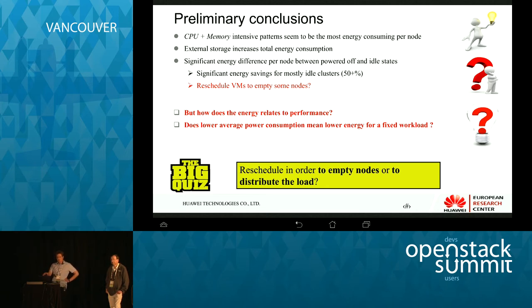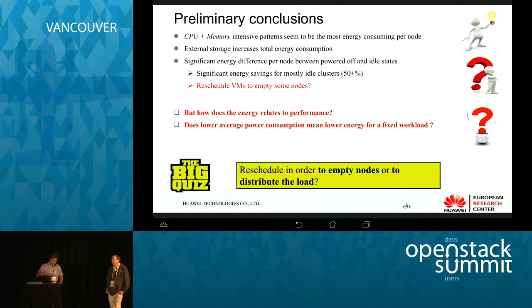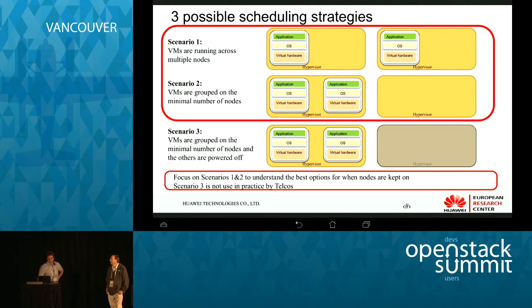Once done with those measurements, we thought: just group VMs on a node — that's the most power-efficient thing. But we had not considered that we just put as much load into the system as we could — the amount of computational work was not constant. The faster the system ran, the more of the infinite square root loop it would do, consuming more power. So it was not actually a good benchmark for measuring energy efficiency. In reality, you have a defined set of work to do. So we started again and defined a very simple workload.